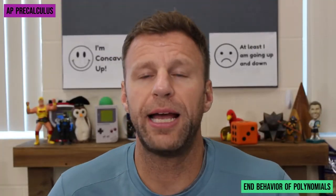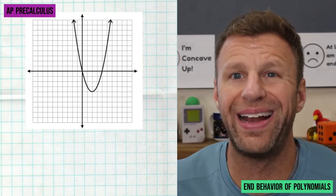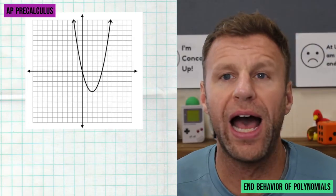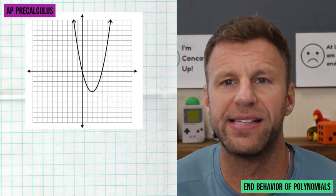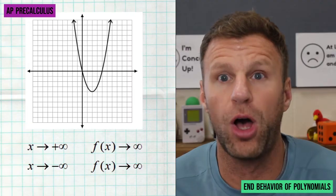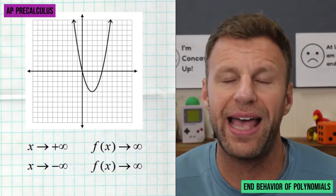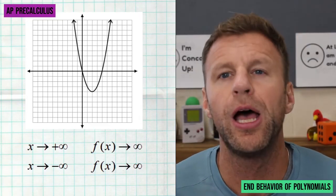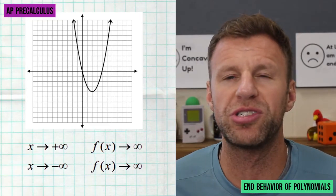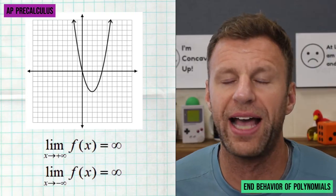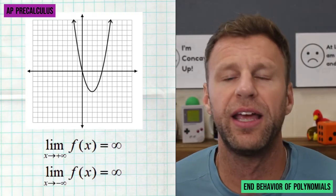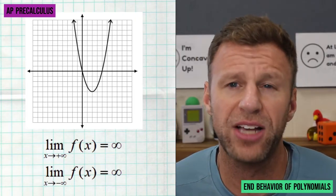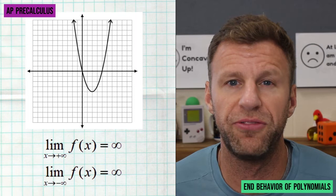Let's look at a quick example. Here we see a graph where both the left and the right ends are going up towards infinity. Using old Algebra 2 notation, you'd say as x approaches infinity, f of x also approaches infinity, and as x approaches negative infinity, f of x also approaches positive infinity. But using our new limit notation: the limit of our function as x approaches infinity equals infinity, and the limit of our function as x approaches negative infinity is also positive infinity.